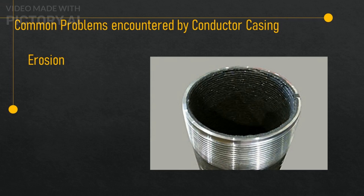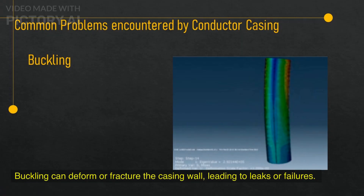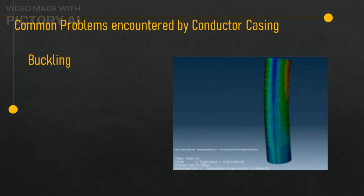Erosion — this is caused by abrasion from sand, gravel, or other solid particles in the fluid flow. Erosion can wear out or damage the casing wall, leading to leaks or failures. Buckling — this is caused by excessive bending or compression of the casing due to external forces such as soil movement, temperature changes, or axial loads. Buckling can deform or fracture the casing wall, leading to leaks or failures. Buckling can be prevented or reduced by using adequate wall thickness, collapse resistance, tensile strength, and cementing.